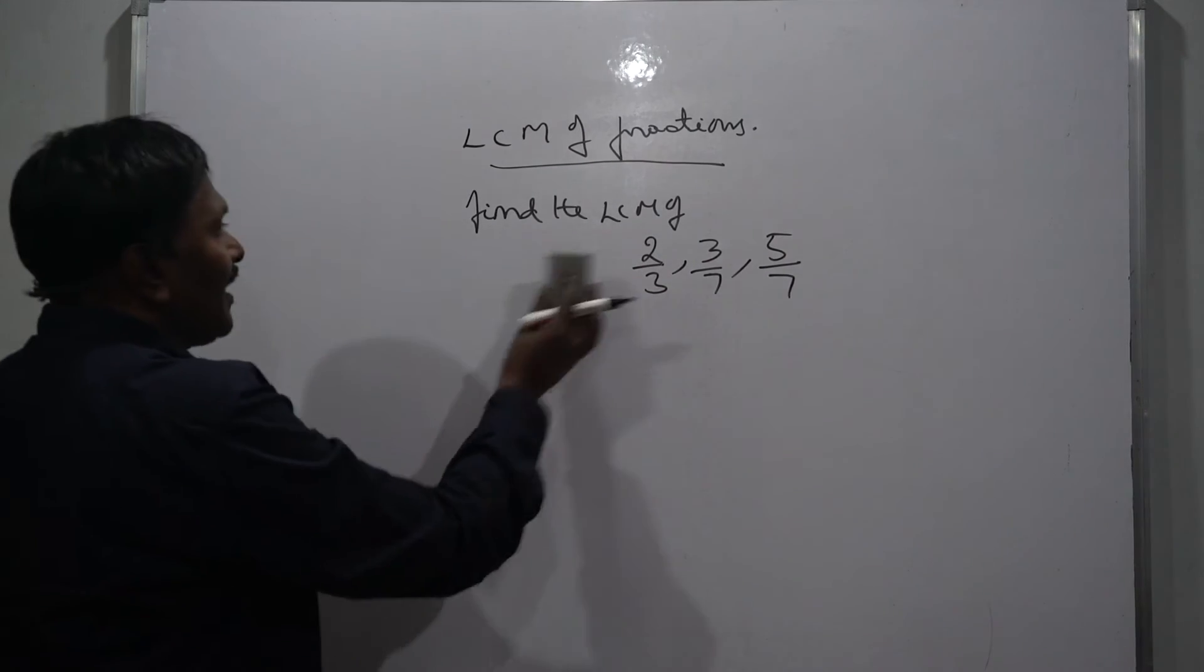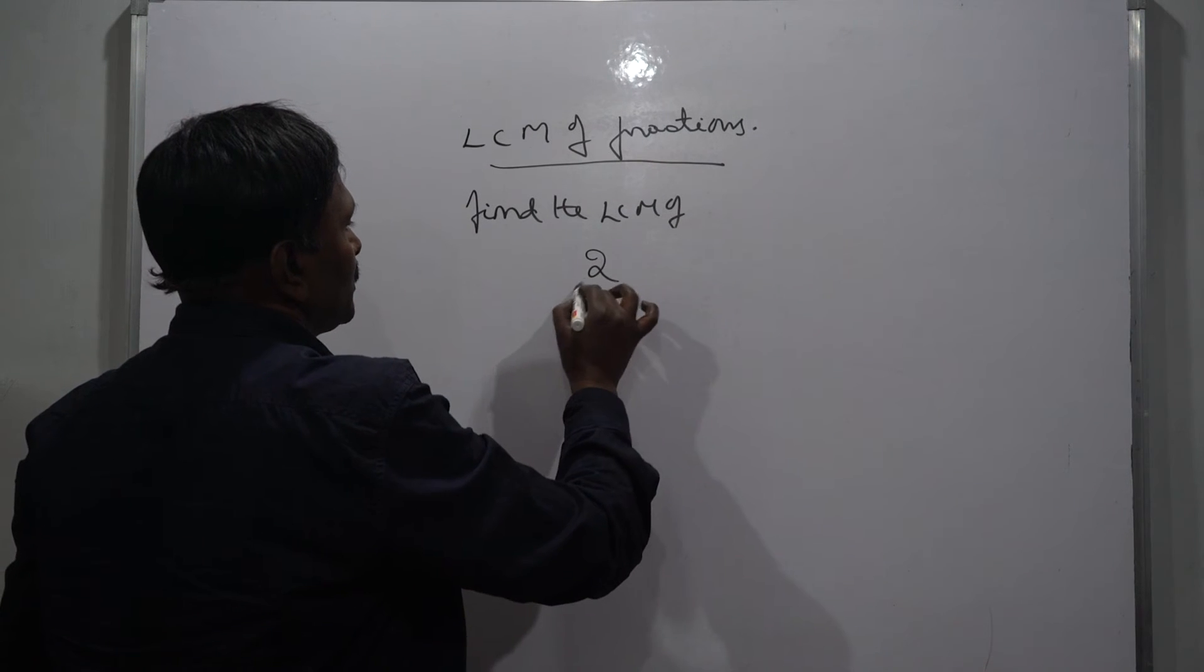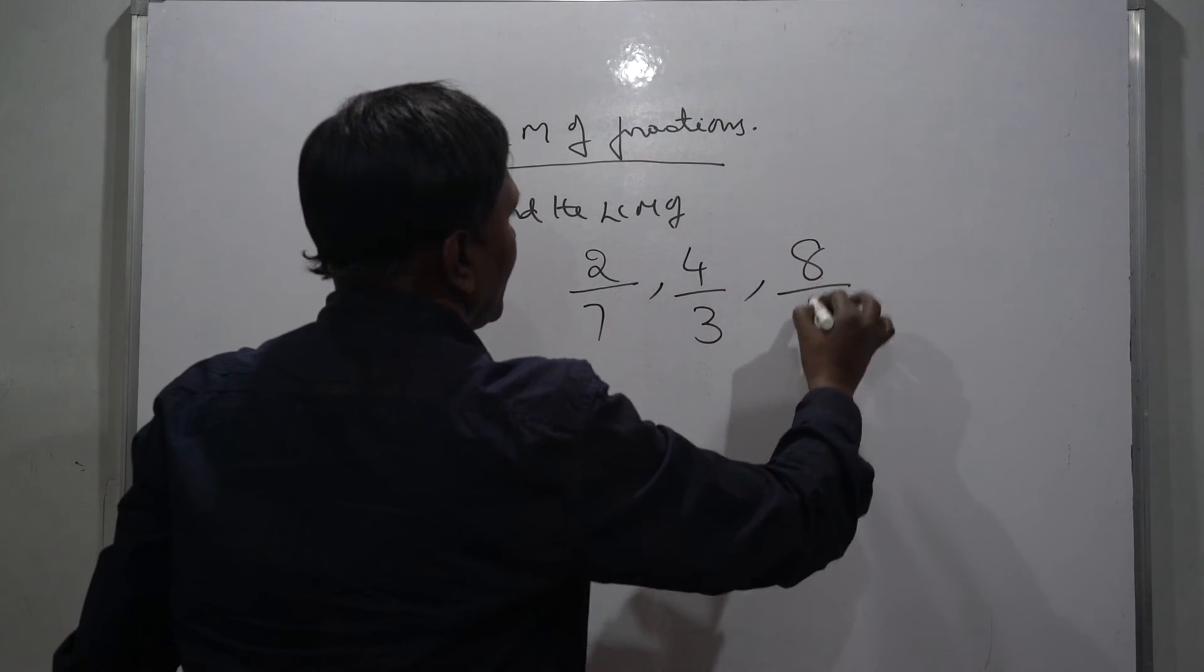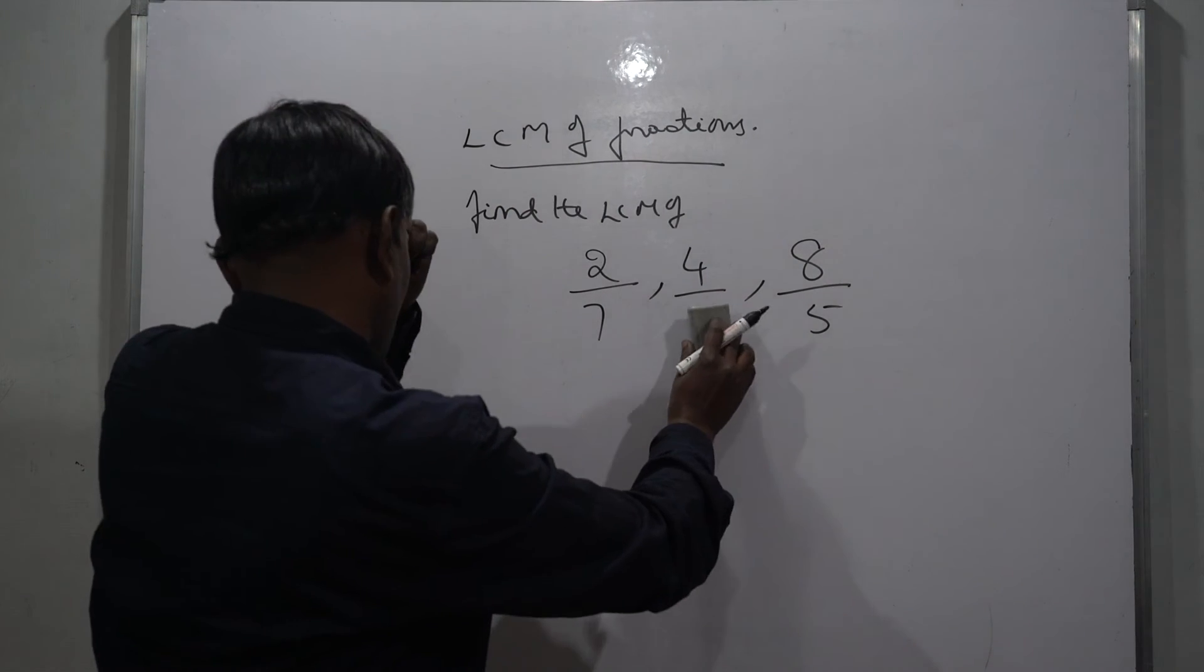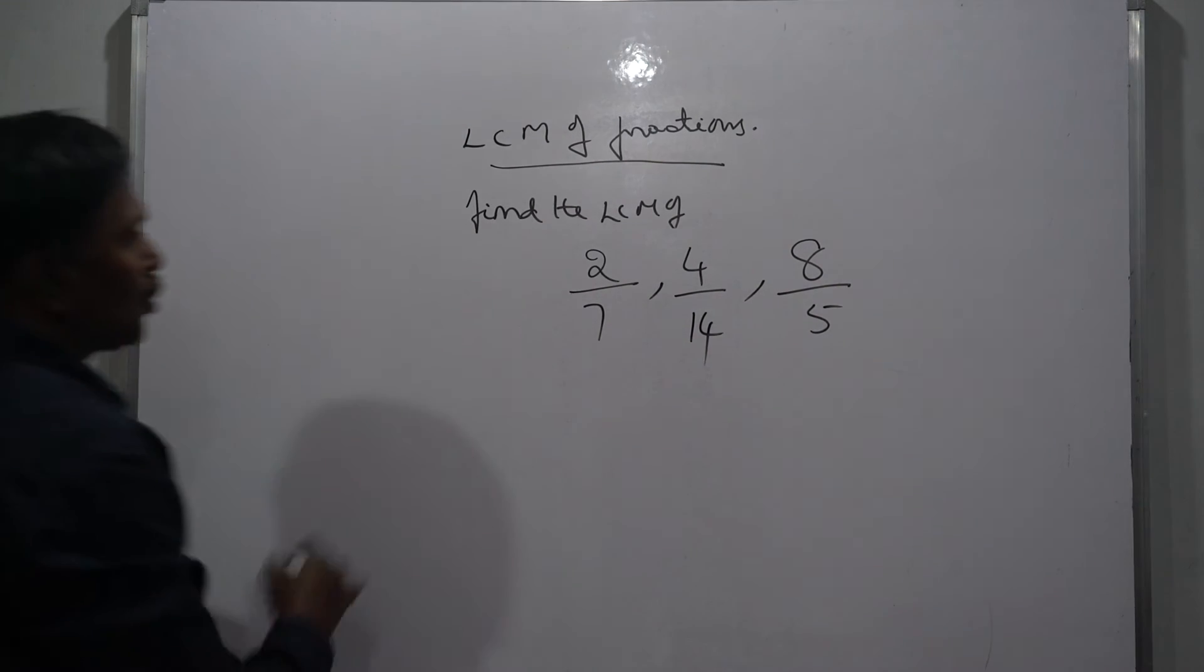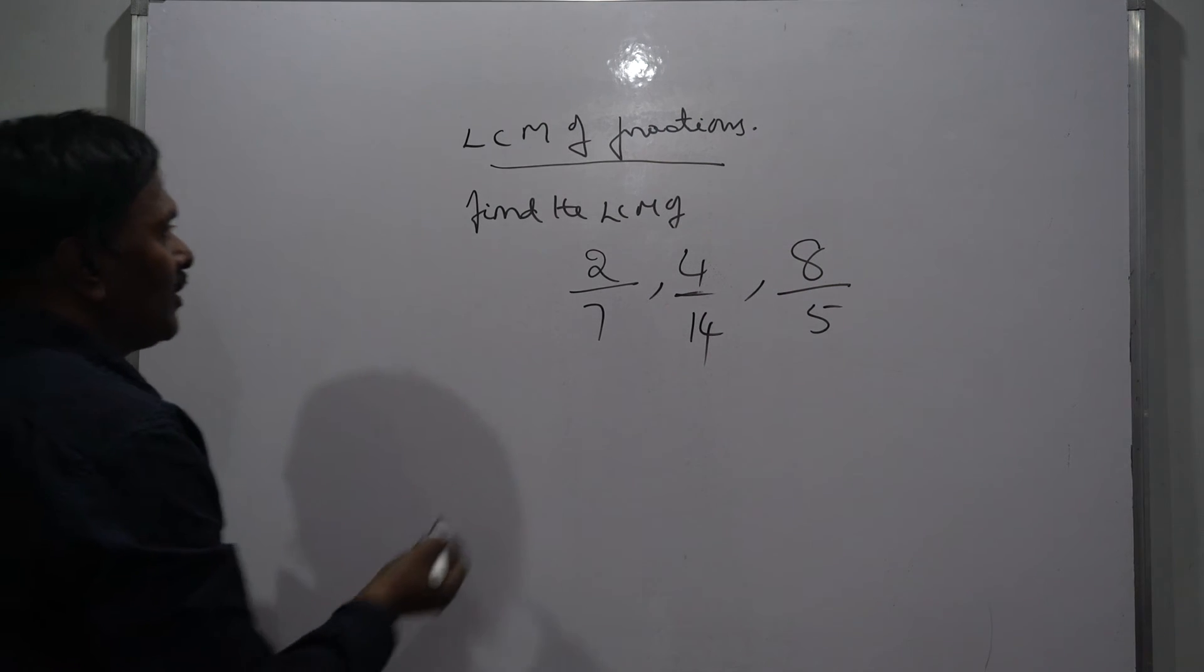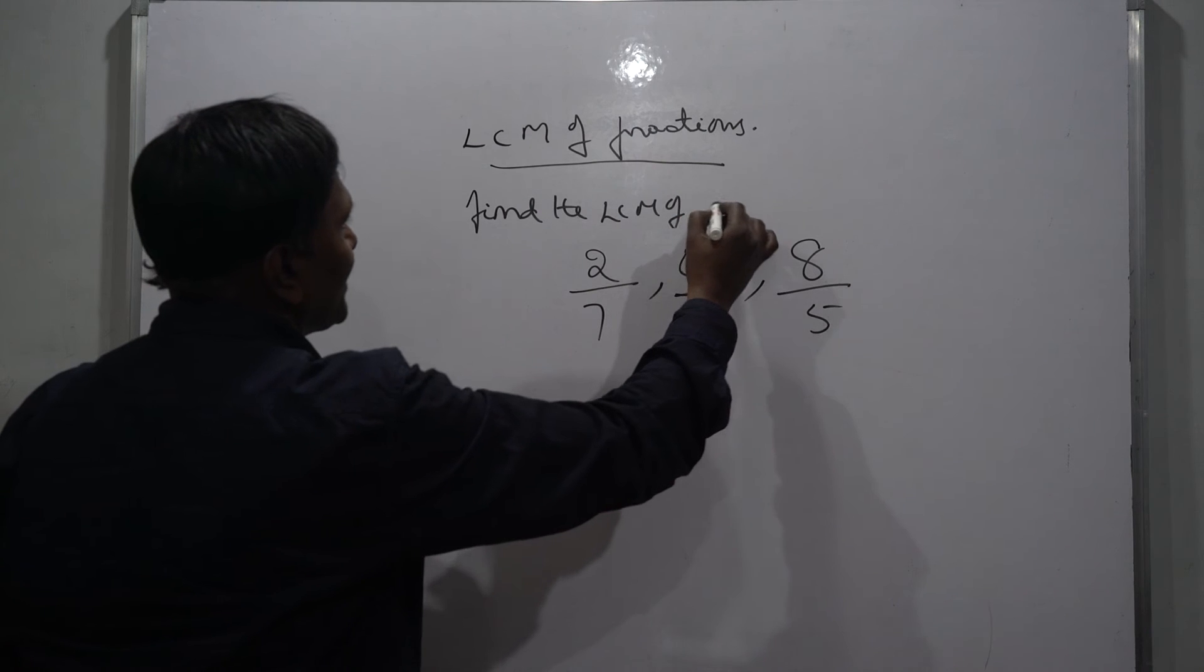We will see one more problem. Find the LCM of 2/7, 4/14, and 8/5. So the LCM of fractions: LCM of numerator by HCF of denominator.